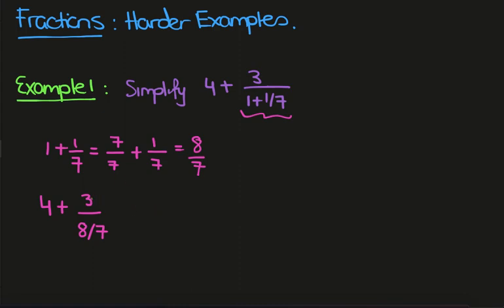Now if we have a fraction in the denominator of another fraction what we can do is simply flip it. So this is the same as 4 plus 3 over 1 times 7 over 8. And now we just multiply this fraction in the usual way. So we have 4 plus 21 over 8.